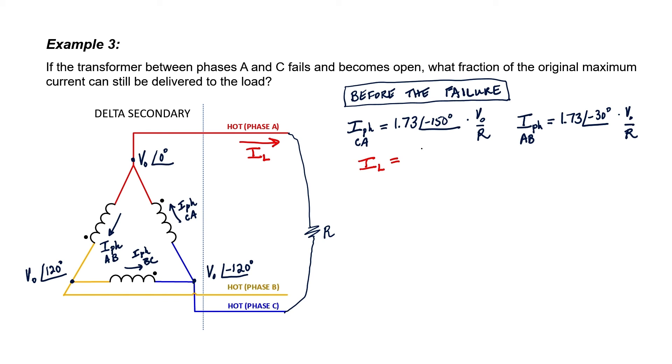What ultimately determines the amount of power delivered to the load is the current here, I sub L, that's passing out through this phase. If we have a balanced load, then the currents through phase B and phase C should be the same.